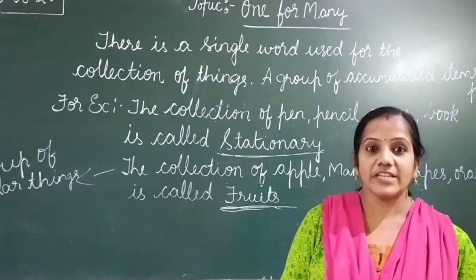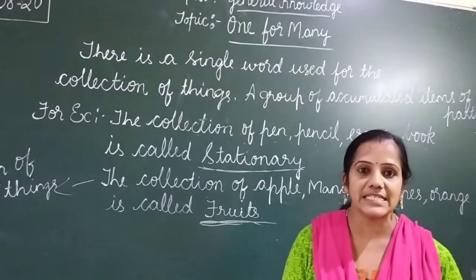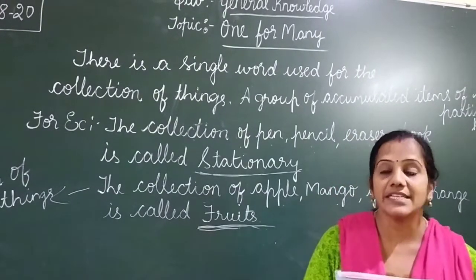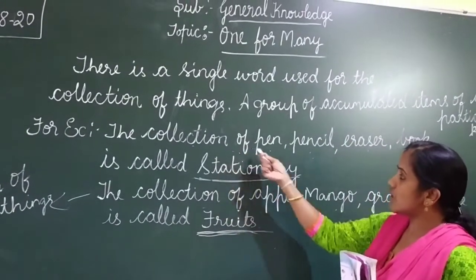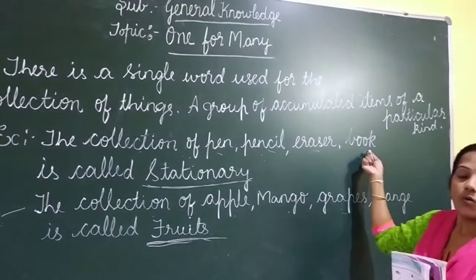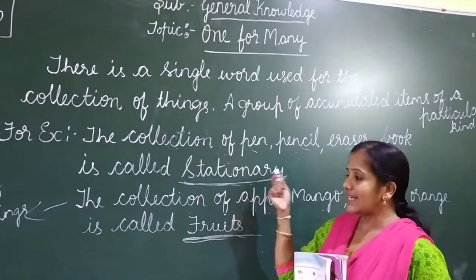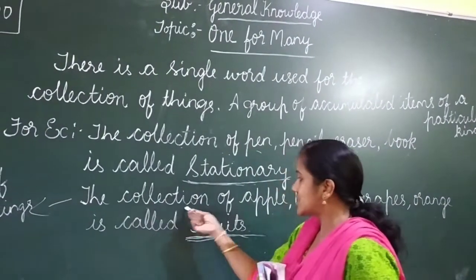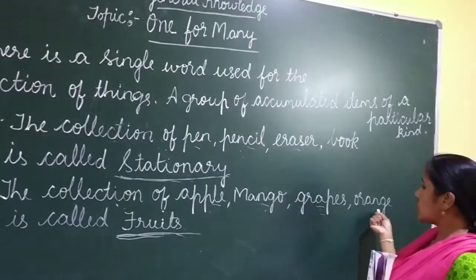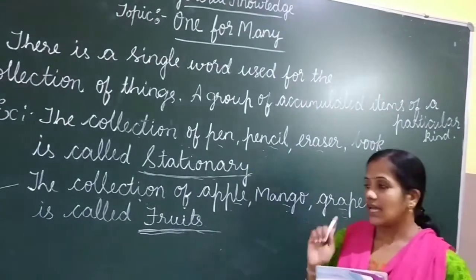In your textbook, open page number 216. You can see some of the collections there. The collection of pen, pencil, eraser, book — we call them as stationery. The collection of apple, mango, grapes, orange — we call them as fruits.